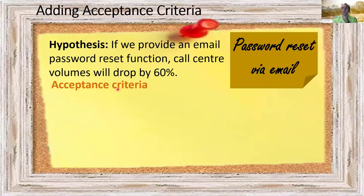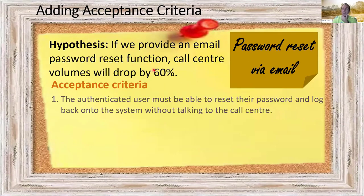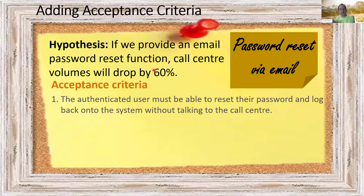Now thinking about our feature card for password reset by email: we've got the feature name and our hypothesis. Then we come up with acceptance criteria that evolve over time. We might start with just the first one: 'The authenticated user must be able to reset their password and log back onto the system without talking to a call centre.' Notice this is not providing a solution — it's stating what needs to happen, almost like how you'd UAT it, but not the solution itself. Lots of people go straight into solution mode; here at the feature level we're still defining what needs to be done.